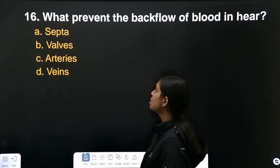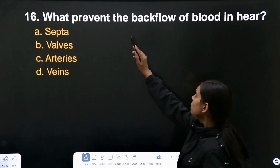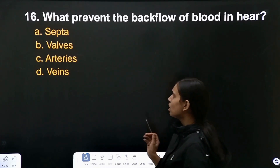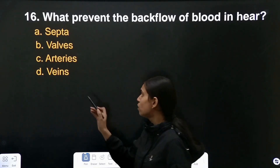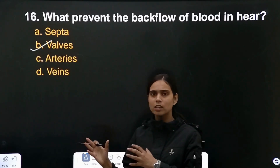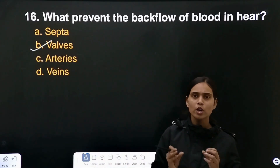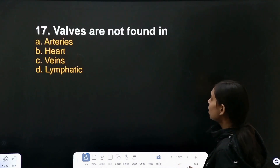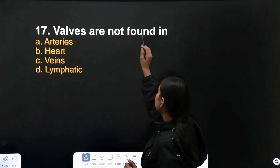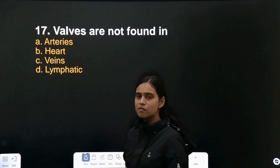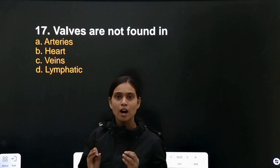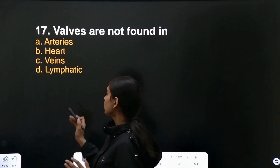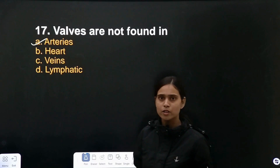Question number 16: what prevents the backflow of blood in the heart? The valve prevents the backflow in the heart. Question number 17: valves are not found in arteries. So the correct answer is arteries — valves are not present in arteries.